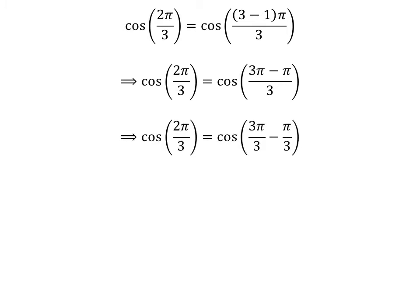The fraction 2 times pi upon 3 can be expressed as the difference of two fractions: 3 times pi upon 3 and pi upon 3.